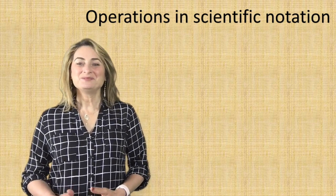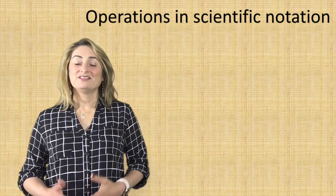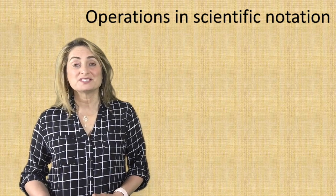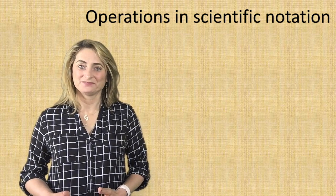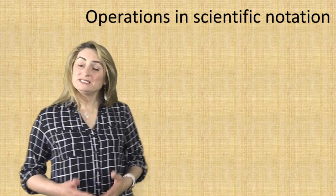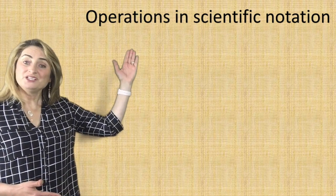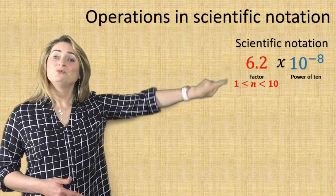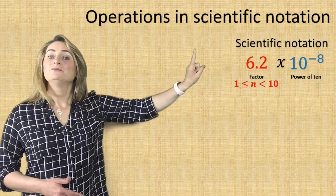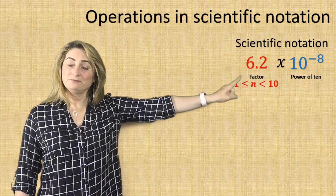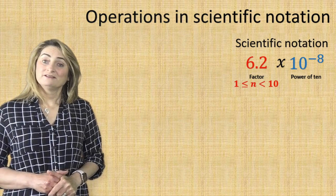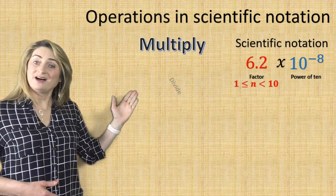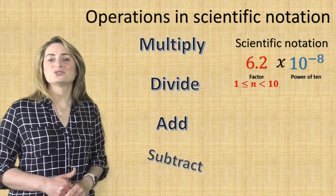Hi everyone, welcome to Mr. Waggid's math class. The last two lessons we talked about reading and writing numbers in scientific notation. Today we will be talking about and discussing operations in scientific notation. Remember, scientific notation is when you have a factor between one and less than 10 multiplied by a power of 10. For today's lesson, how do we multiply, divide, add, or subtract those numbers?